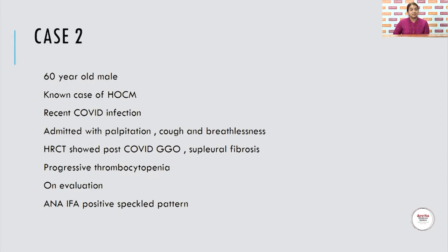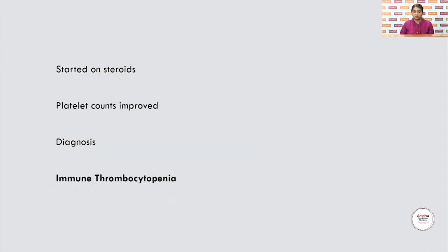Case 2: A 60-year-old male, known case of hypertrophic obstructive cardiomyopathy with recent COVID infection, was admitted with palpitations, cough, and breathlessness. HRCT of the chest showed post-COVID ground-glass opacities and subpleural fibrosis. He suddenly developed progressive thrombocytopenia. On evaluation, he was found to be ANA-IFA positive with a speckled pattern. He was started on steroids and platelet counts improved. The diagnosis: immune thrombocytopenia.